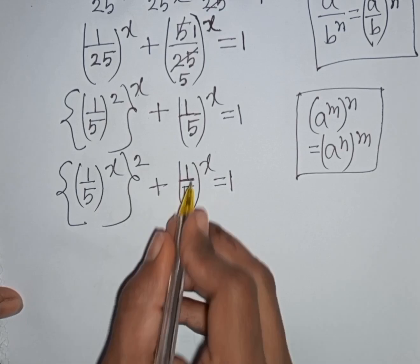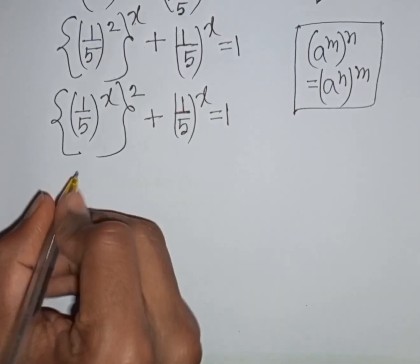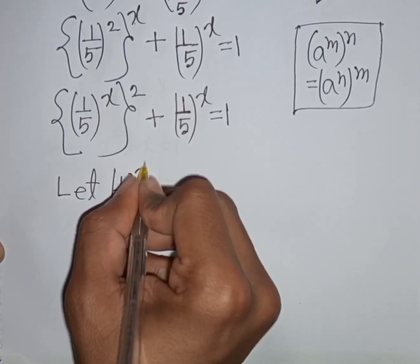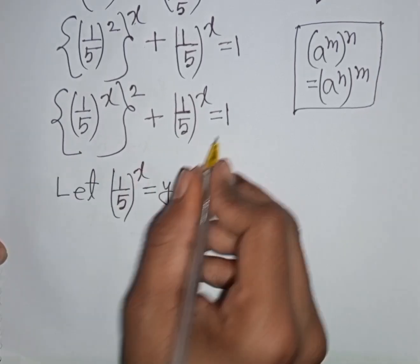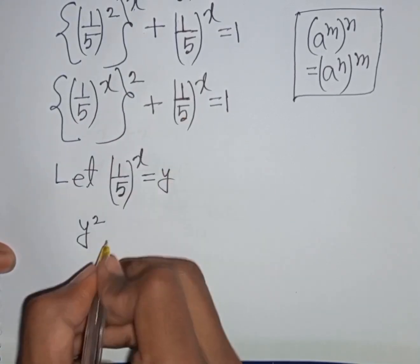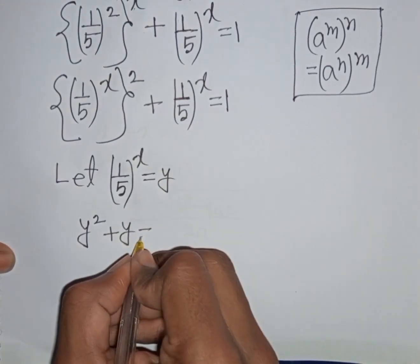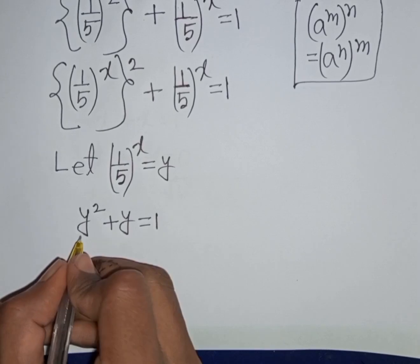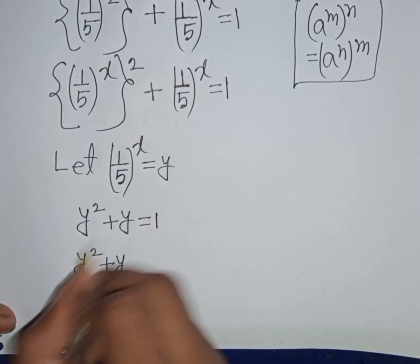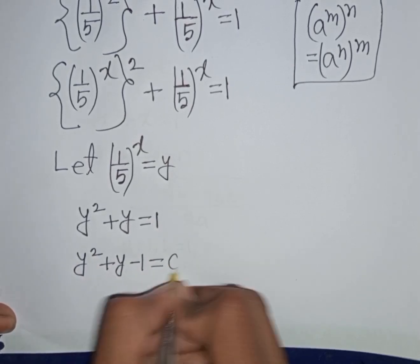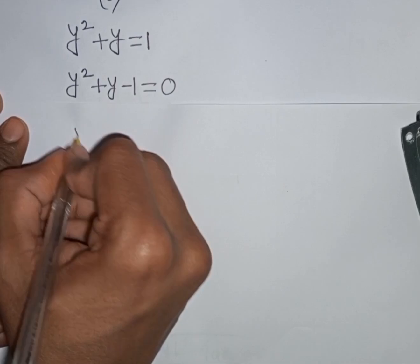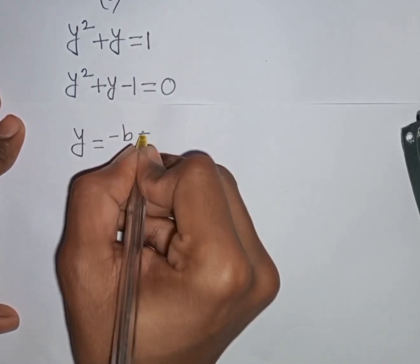Now we see (1/5) power x appears in both terms — both terms are the same. So let (1/5) power x be substituted by y. So our equation will be y squared plus y is equal to 1. Taking the 1 to the left side gives y squared plus y minus 1 equals 0. Now we can apply the quadratic formula.